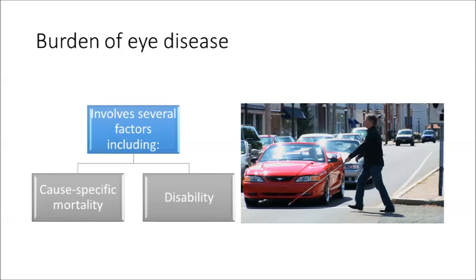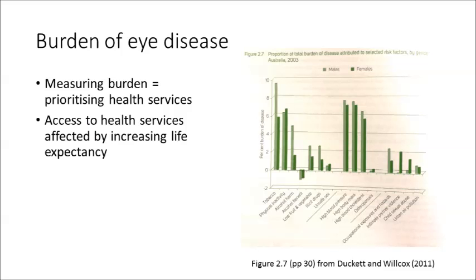Duckett and Wilcox describe the burden of disease as a measure that considers several factors, including cause-specific mortality — for example, the years of potential life lost — and disability, which can be attributed to certain conditions, for example, years of life that someone can live with the disability. Measuring the burden of disease is being used by healthcare authorities to prioritise health services to patients dependent upon this measure.